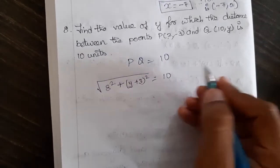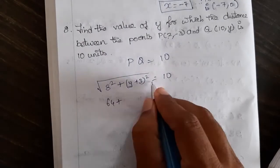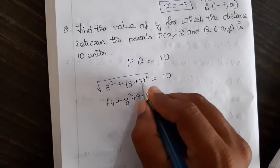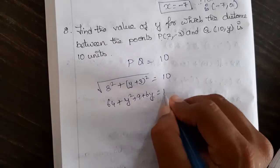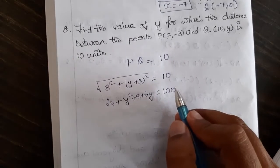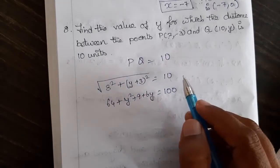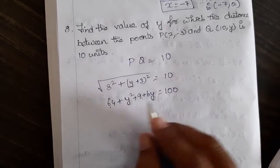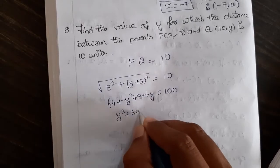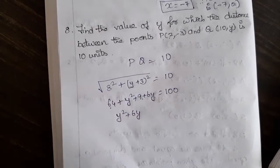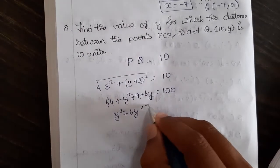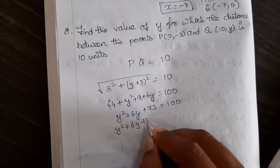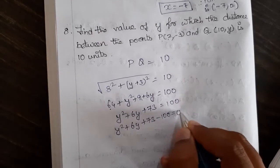Squaring both sides: 8² is 64, and expanding (y+3)² using identities gives y² + 9 + 6y. So 64 + y² + 6y + 9 = 100. That simplifies to y² + 6y + 73 = 100, and bringing 100 over gives y² + 6y + 73 - 100 = 0.